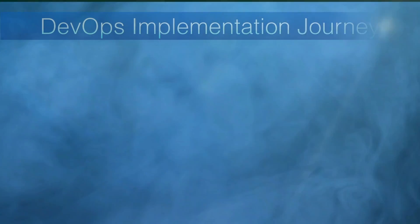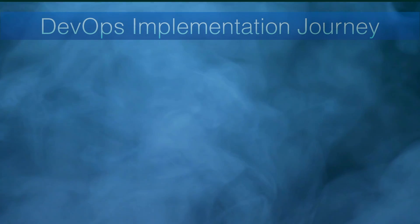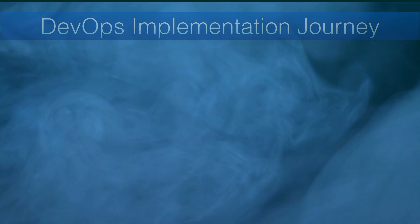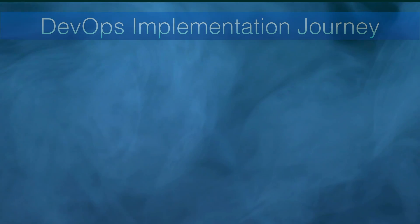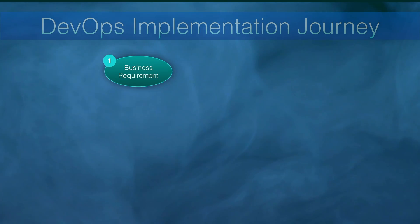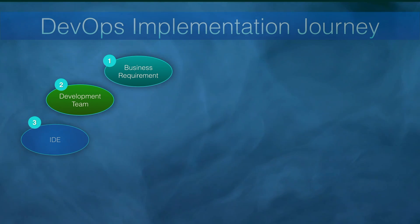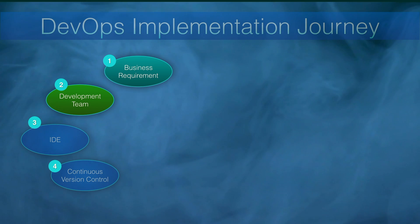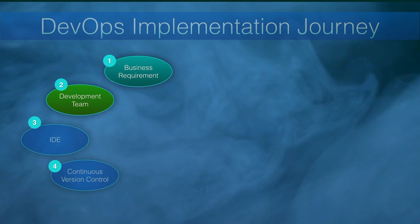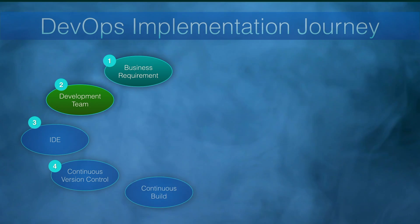Now let's talk about the core of DevOps in terms of the implementation journey. We will talk about various processes or techniques and later identify the right tool proliferation for all these processes. First, we get a requirement from the business or internal team, identify the right skilled resources, and set up a development team. The development team then sets up an integrated development environment for code construction. This IDE directly gets integrated with the source code management system as continuous integration, meaning the developer will be able to create, update, or edit code and pull the latest code from the version control system, all while doing coding.